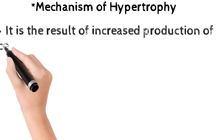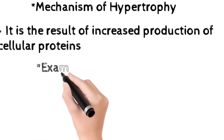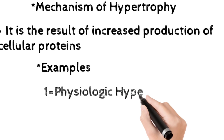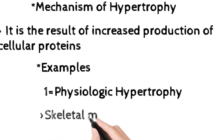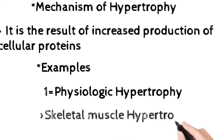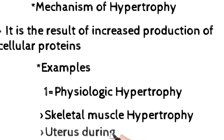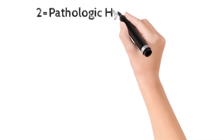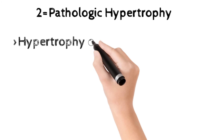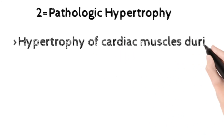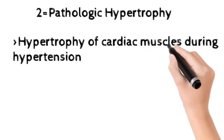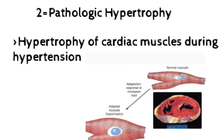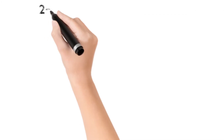The mechanism of hypertrophy is the result of increased production of protein inside the cells. For examples: physiologic hypertrophy includes skeletal muscle hypertrophy in bodybuilders, and uterus hypertrophy during pregnancy. Pathologic hypertrophy includes hypertrophy of cardiac muscle during hypertension. In the diagram, a normal skeletal muscle myocyte under stress undergoes adaptation — hypertrophy — and the size of the cell becomes increased.